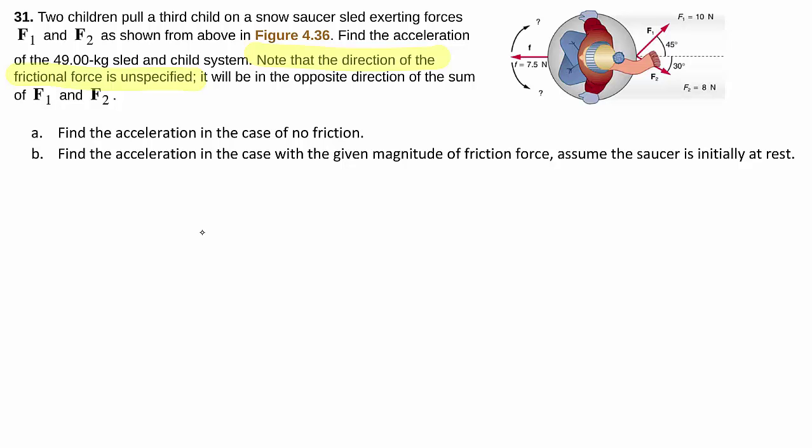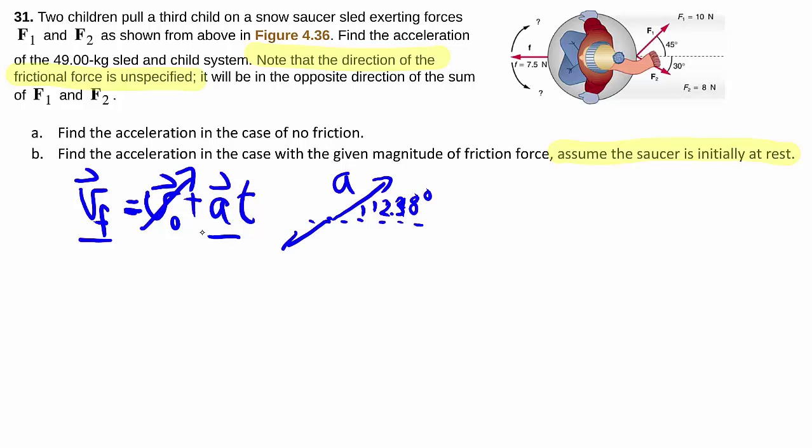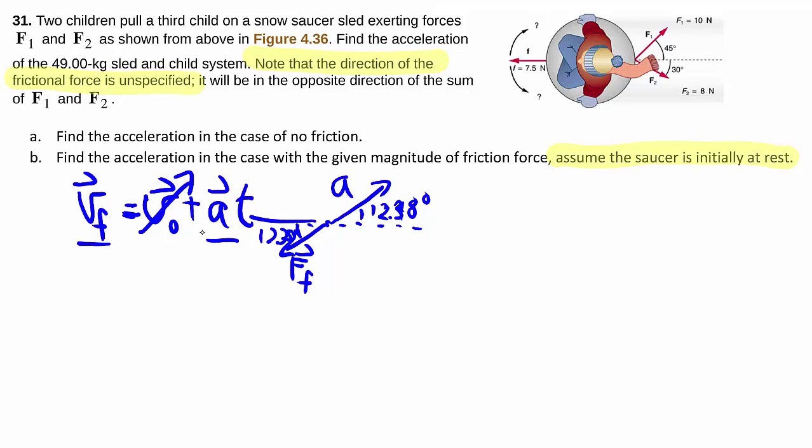They also add an extra line here that assumes the saucer is initially at rest. This is important because the friction is not opposite to your acceleration, it's opposite to your velocity. Fortunately, as long as the initial velocity is zero, then both of these will be in the same direction. So given that, without friction, our body is moving that way with 12.4, well, let's use 12.38 degrees like that. Then we know that the friction must act that way with 12.38 over there. So we have our friction. So let's add that to our free body diagram.